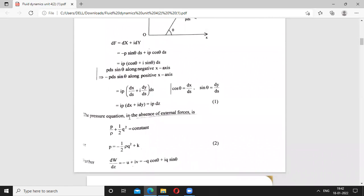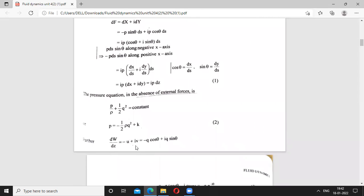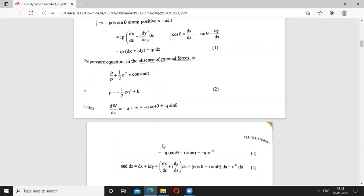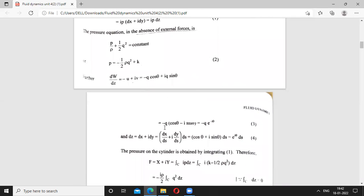Now, the pressure equation in terms of external force, you can see P by rho plus half Q squared constant. So here we have DW by DZ minus U plus iota V, which equals minus Q, cos theta minus iota sin theta, which equals minus Q, E raised to power minus iota theta.